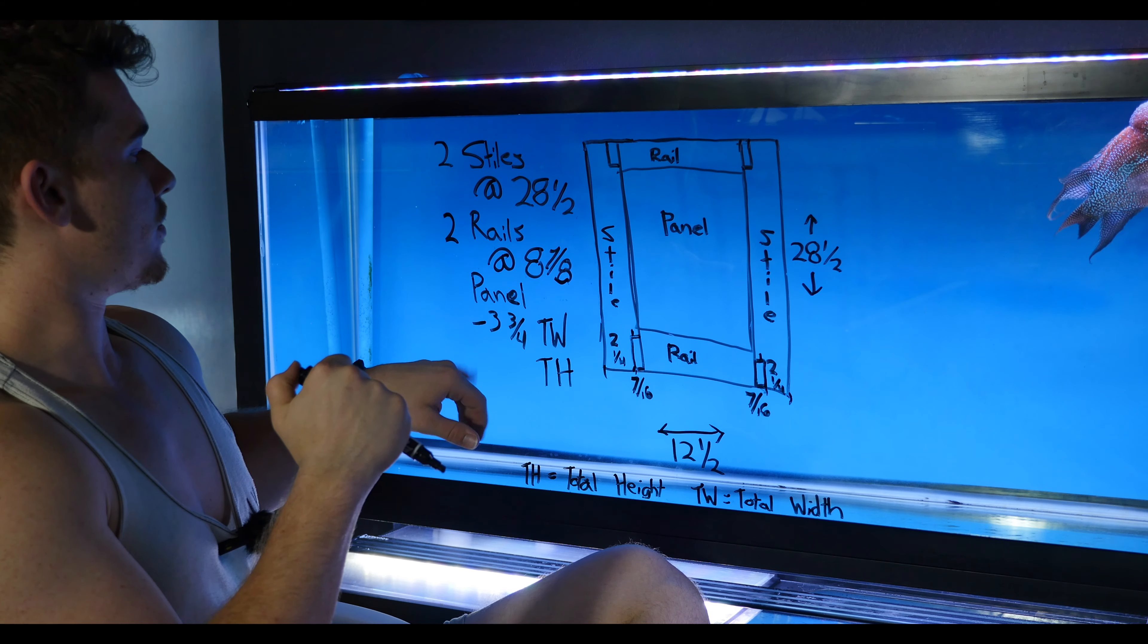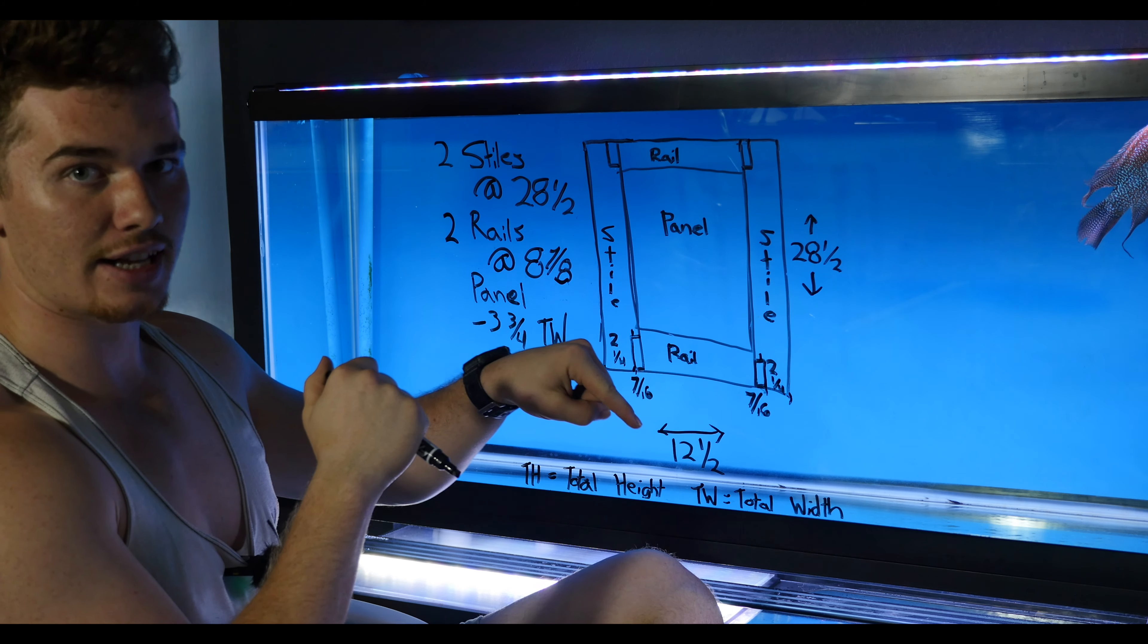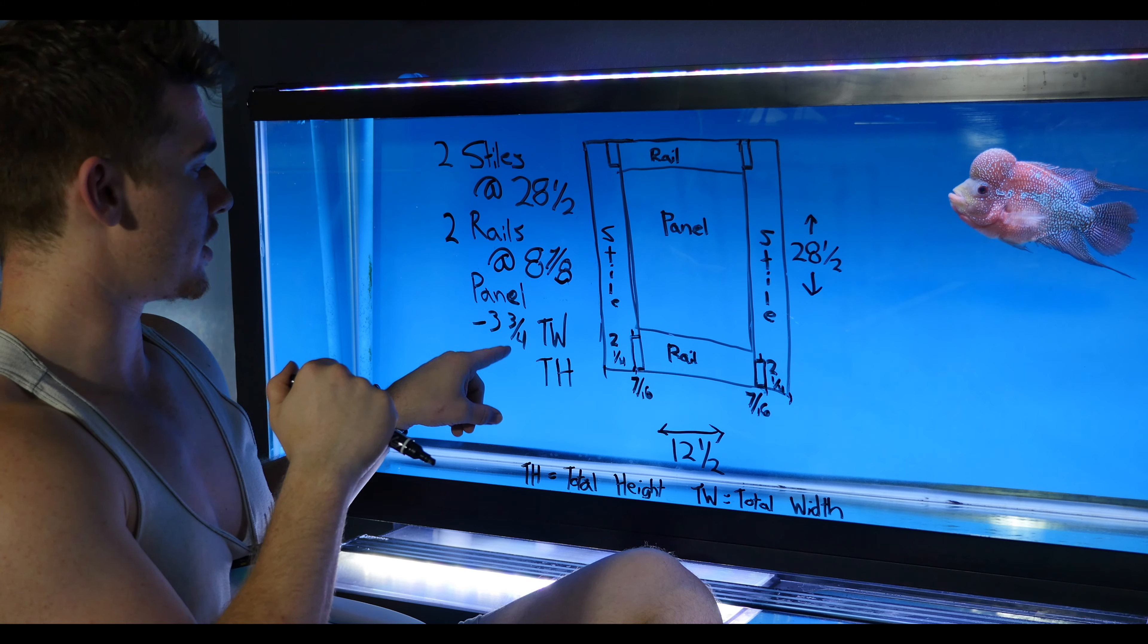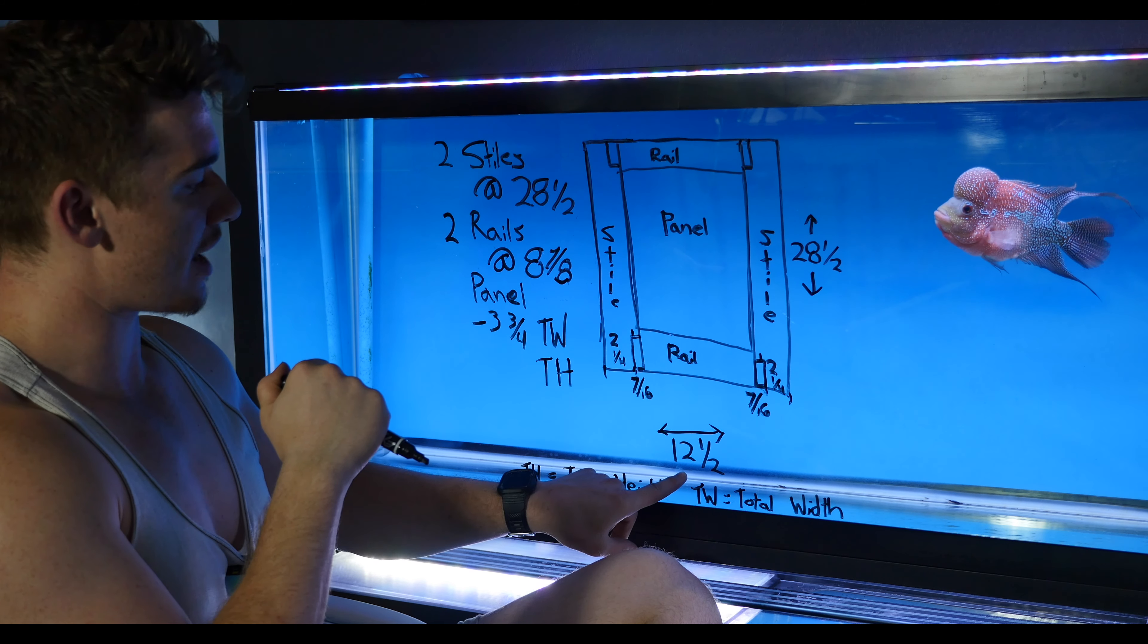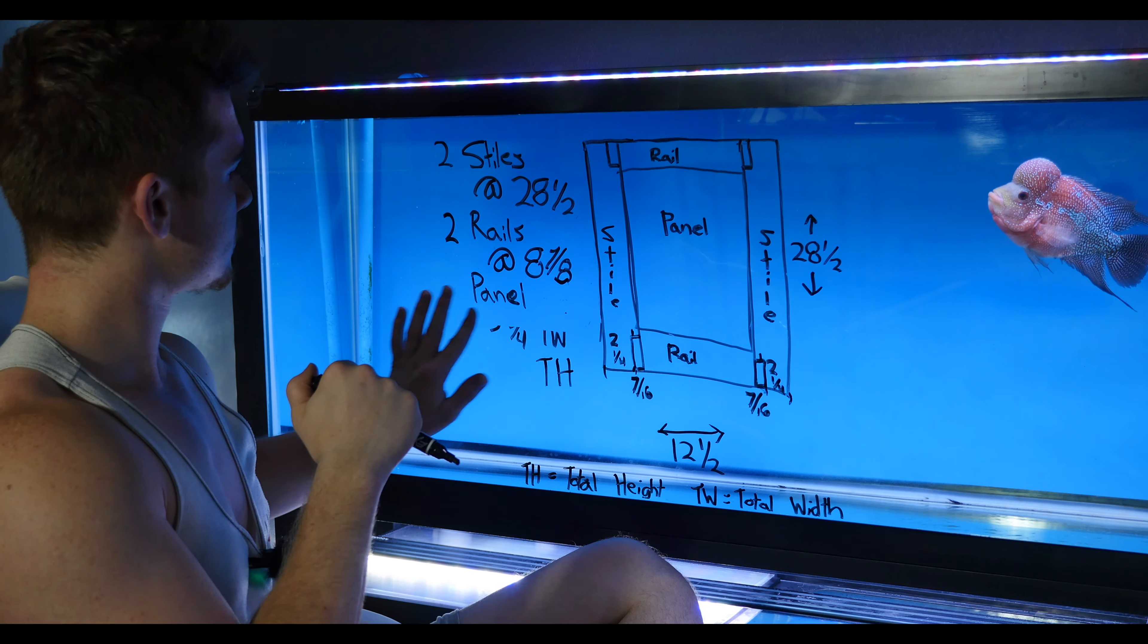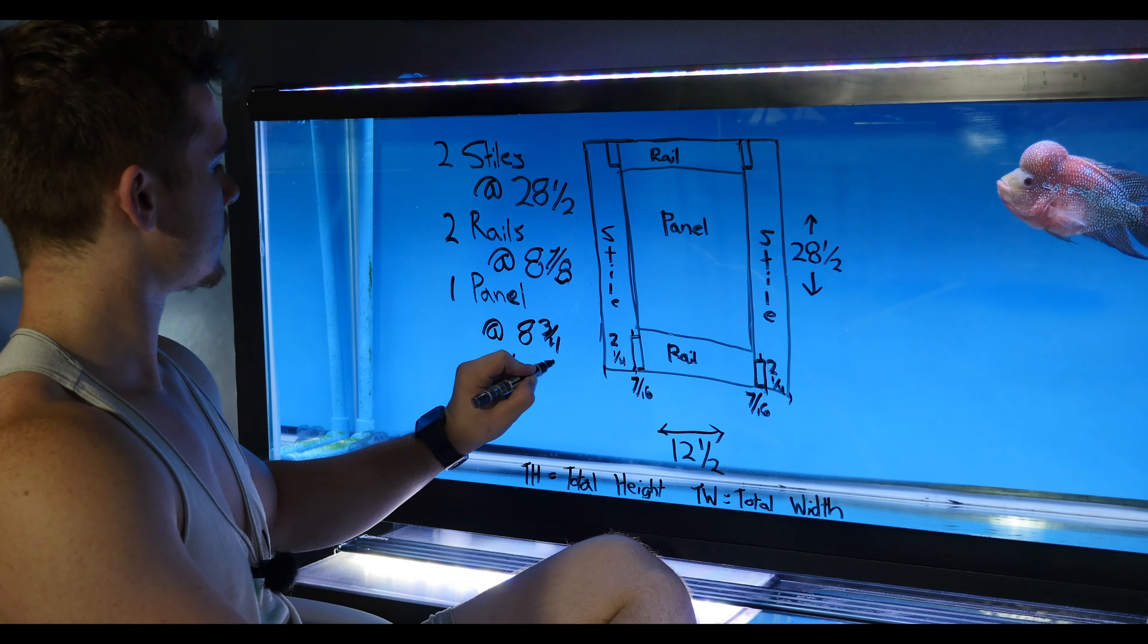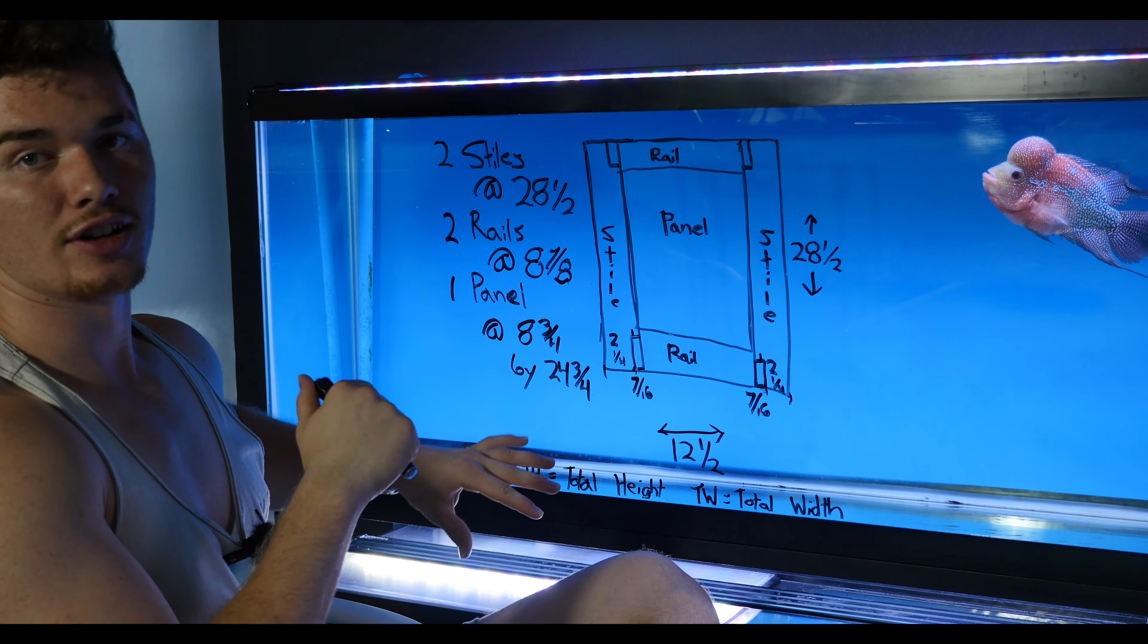So for this panel, initially for the rails, we did three and five-eighths. We added an eighth of an inch. So for the panel, we're going to subtract three and three-quarter from twelve and a half and three and three-quarter from twenty-eight and a half. And there you have it.